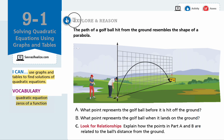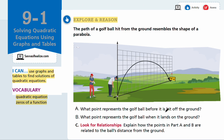Let's start with exploring reason. The path of a golf ball hit from the ground resembles the shape of a parabola. What point represents the golf ball before it is hit off the ground? The man has the ball right here, so on a coordinate graph, that would be the y-axis and this would be the x-axis. This point — the start of the golf ball — would be represented by (0, 0).